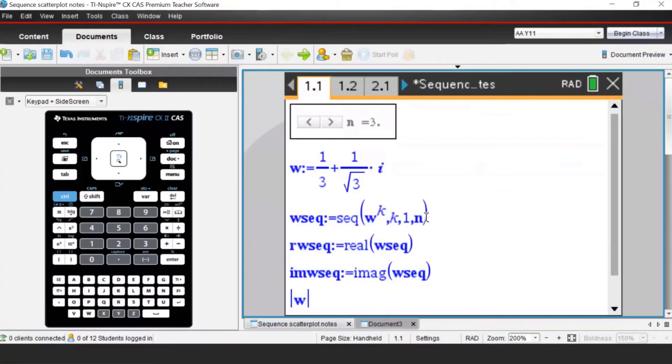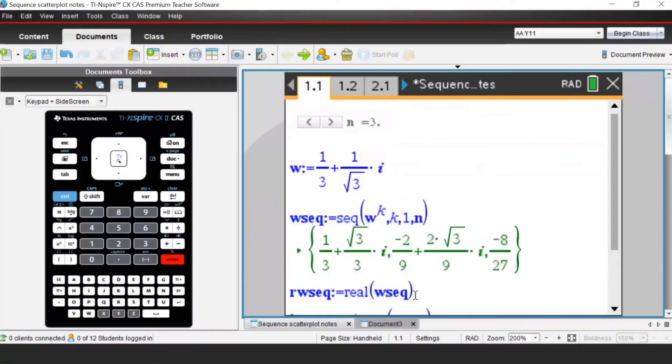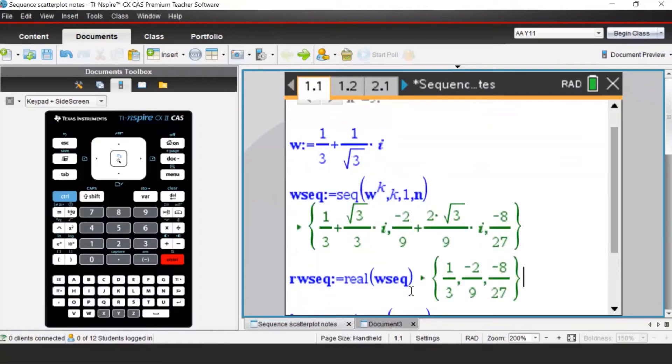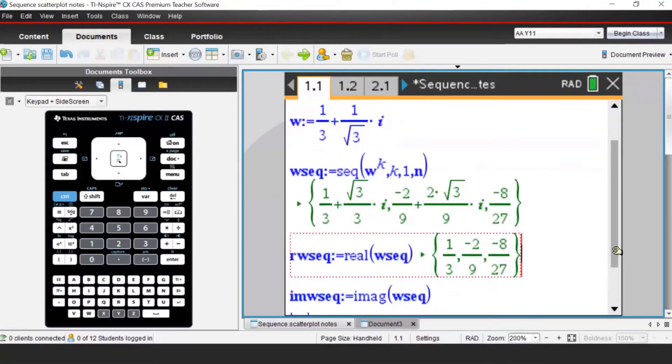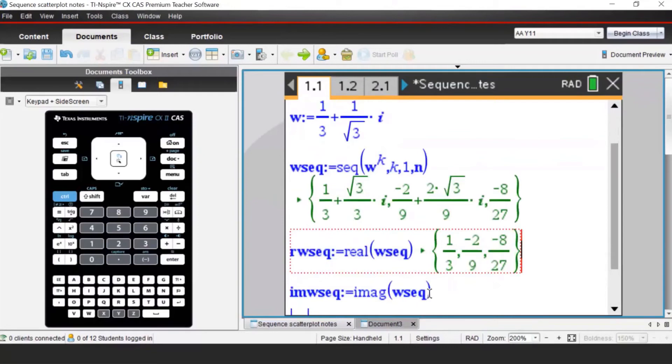And then we're finding the real part of this sequence and imaginary part of this sequence. So if I start, let's say, with 3 here, and I press Enter, this is my sequence, and these are the real parts, and here are the imaginary parts.